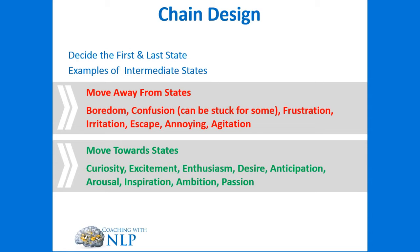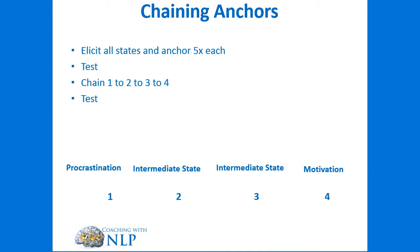As we decide which states to anchor for the client, we're going to anchor each one at least five times. One of the problems with chaining anchors is that if the chain doesn't carry through, it's because the chain collapsed somewhere. You've heard the saying a chain is only as strong as its weakest link — so make sure each state is sufficiently intense, hence why we stack each state five times. Then you're going to test each state, make sure the client goes into it, and then you're going to chain them together.